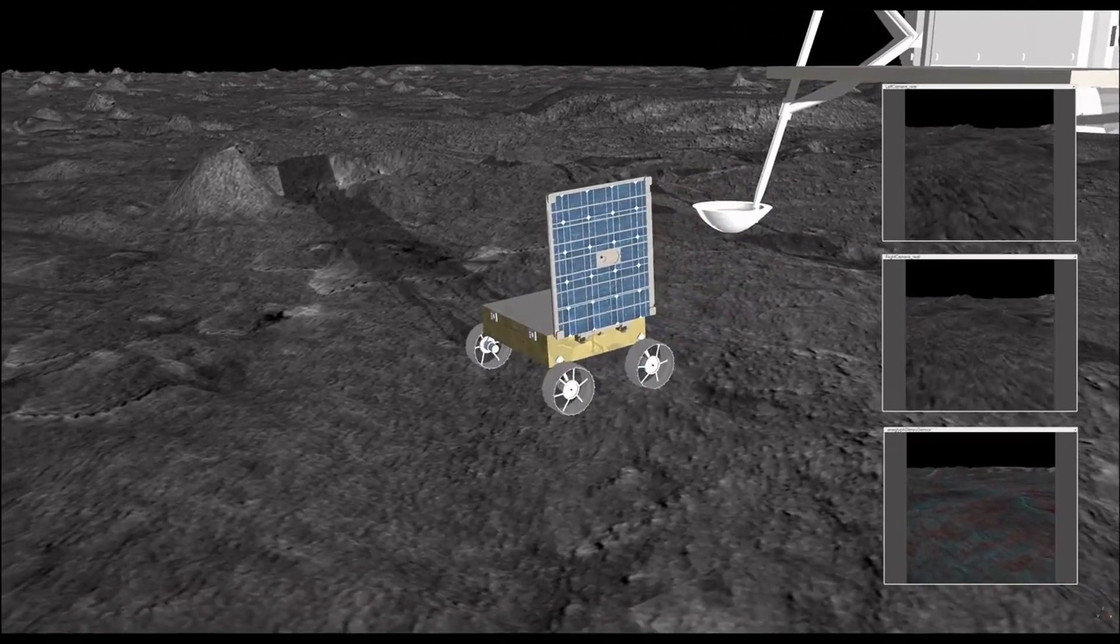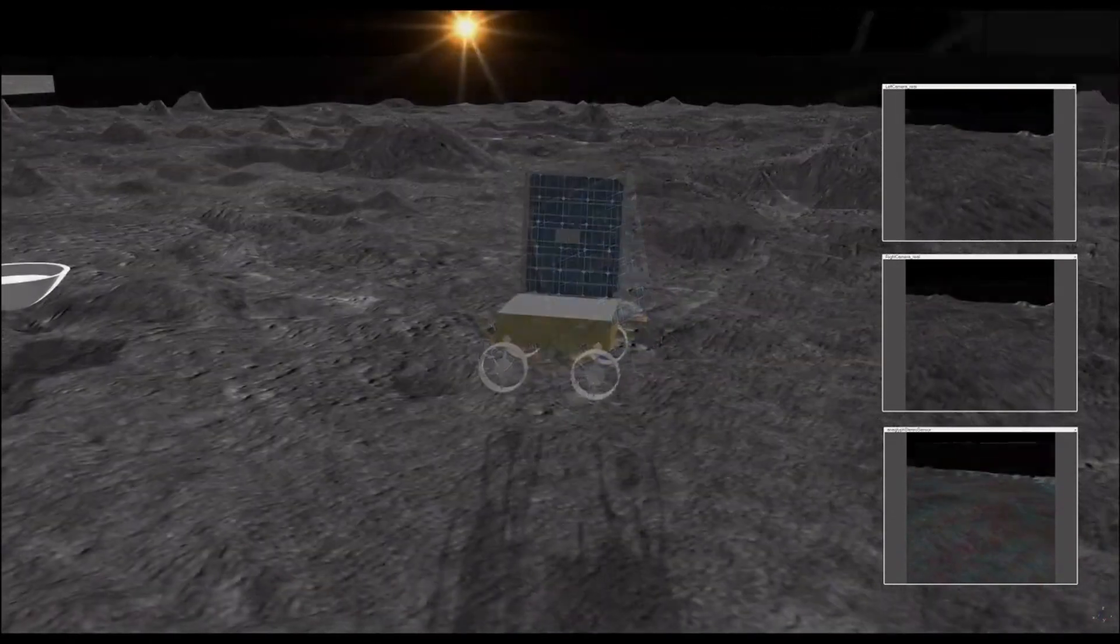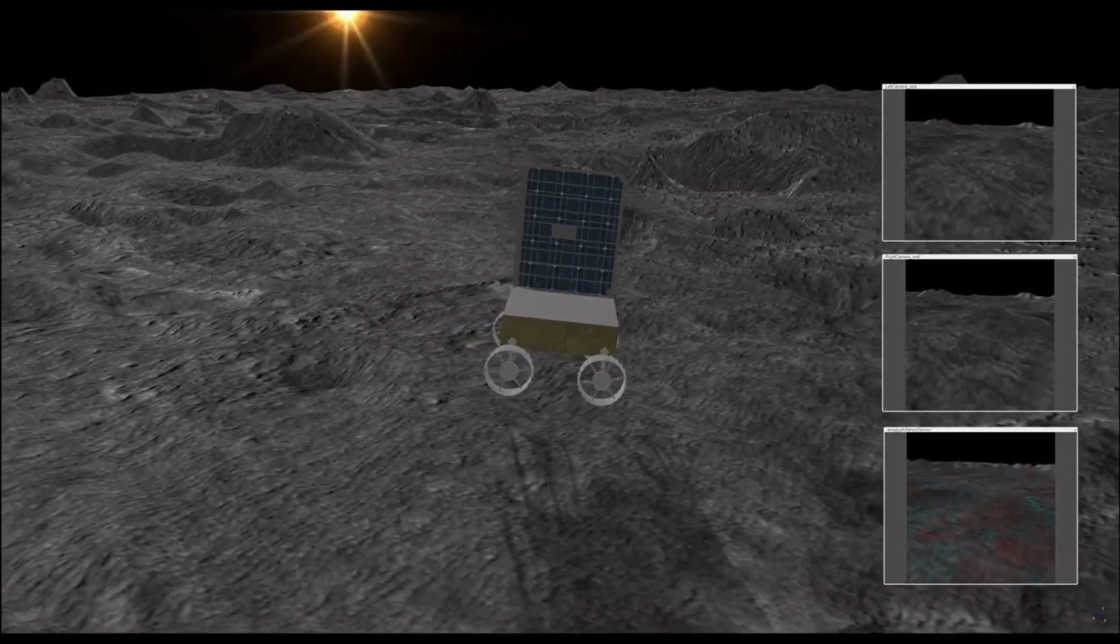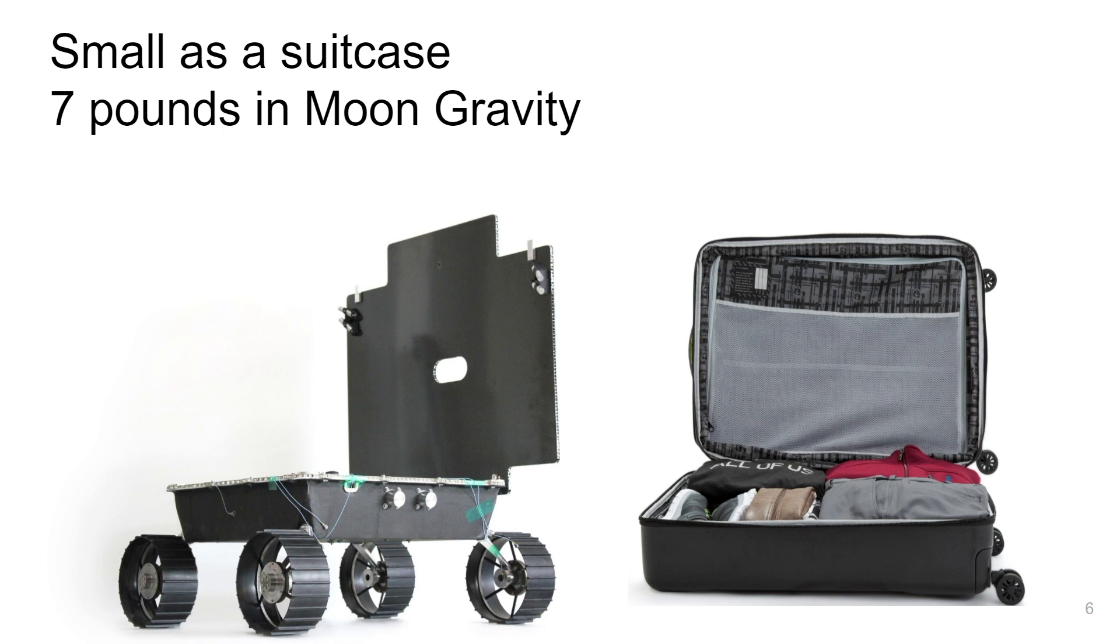The rover has self-sufficient power, electronics, thermal regulation, navigation, and autonomy to succeed. It is about the size of a suitcase and weighs seven pounds in moon gravity.